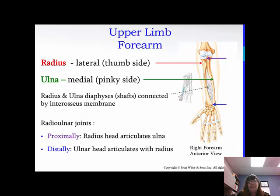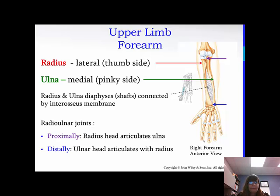So the radius is the lateral, thumb-side of your forearm. The ulna is your medial, or pinky side of your forearm. The radial and ulnar diaphyses are connected by what's called an interosseous membrane. That interosseous membrane is like a meshwork that connects those two bones, so it kind of limits the movement there a little bit. The radial-ulnar joints: proximally, the radius head articulates with the ulna, and then distally the ulnar head articulates with the radius. You can see those are color-coded as well.